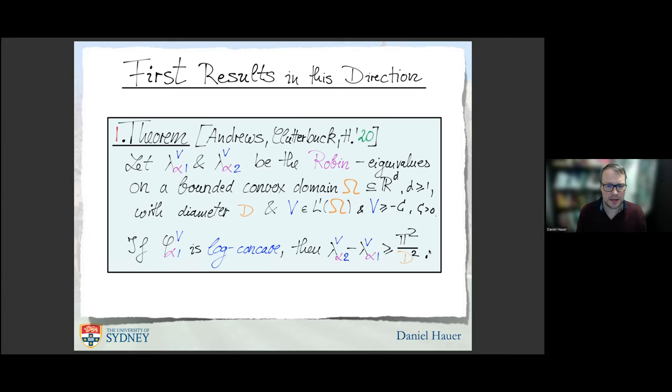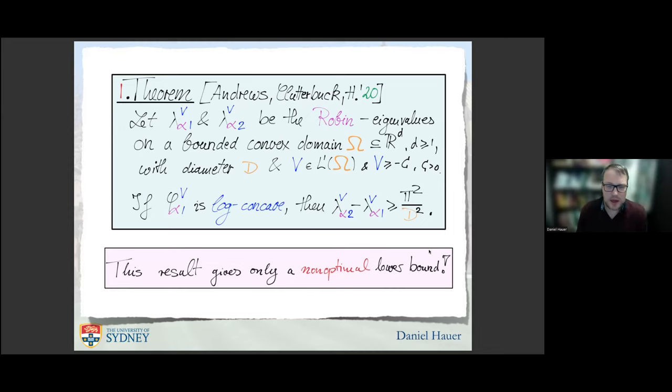When you have alpha equals zero, we are in the Neumann case. In the Neumann case, the first eigenfunction is just constant one. When V is the zero potential, we recover an optimal bound because this is the Payne-Weinberger inequality. This bound becomes sharp. We had a new proof of the Payne-Weinberger inequality as a by-product, but we were actually more interested in proving the fundamental gap conjecture in general for general convex potentials.